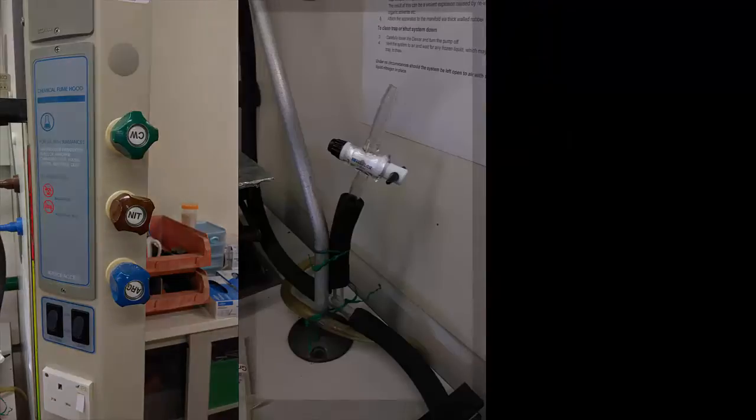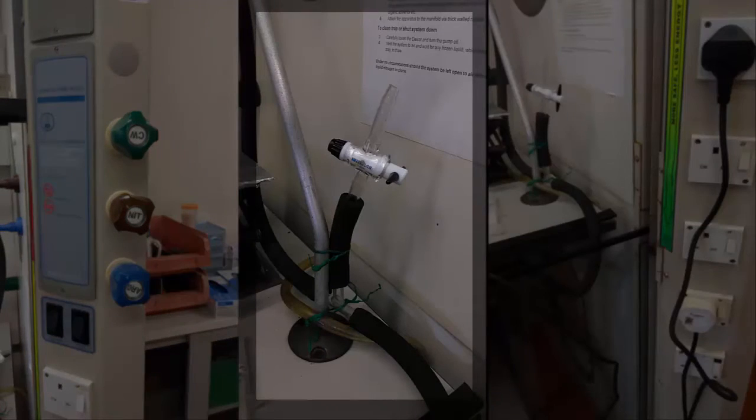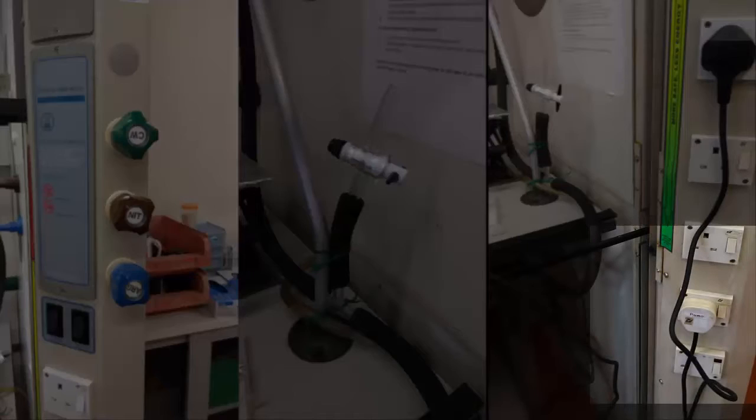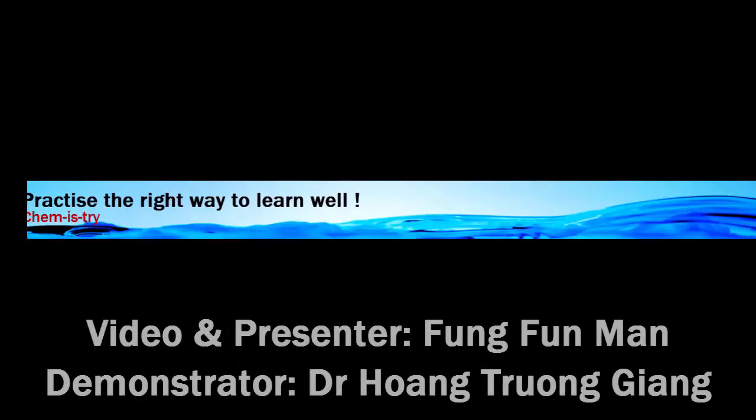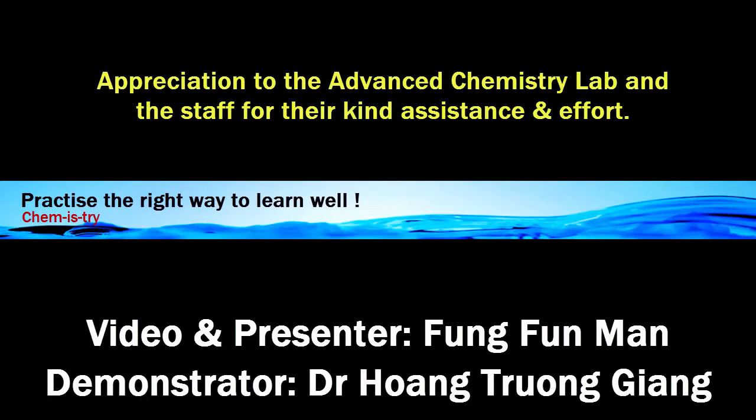And lastly, we turn off the nitrogen source, switch the outlet off the pump, and then turn off the main switch. Remember you always open the outlet of the pump first before you switch off the pump. Thank you very much. I hope you learned something from the video. Good day.